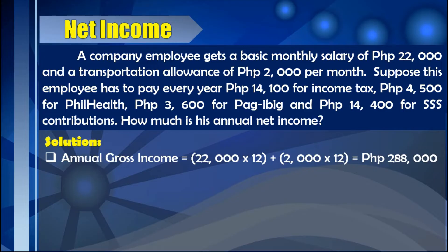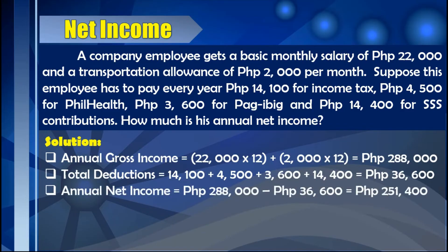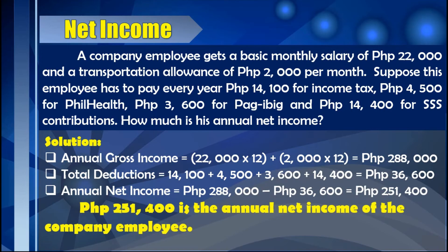After identifying the annual gross income, we determine the total deductions by adding all yearly deductions: P14,100 for income tax, plus P4,500 for PhilHealth, plus P3,600 for Pag-IBIG, plus P14,400 for SSS, which equals P36,600. We then subtract the total deductions from the gross income: P288,000 minus P36,600 equals P251,400. So P251,400 is the annual net income of the company employee.